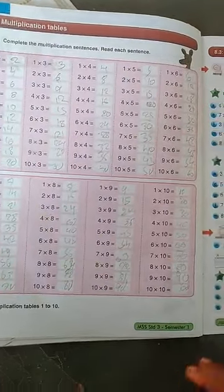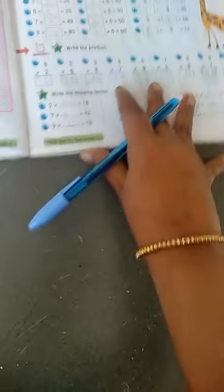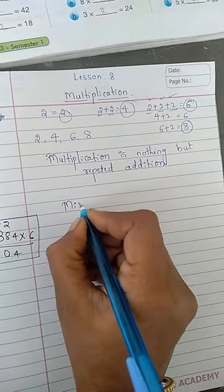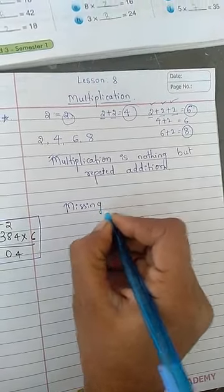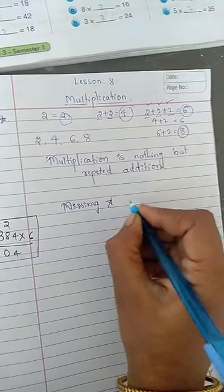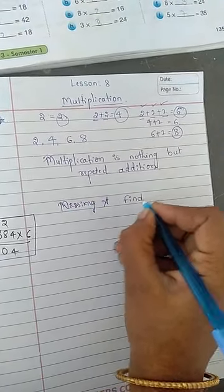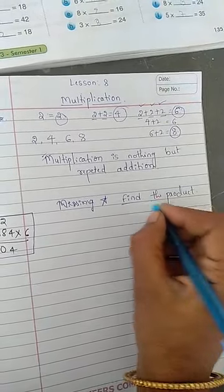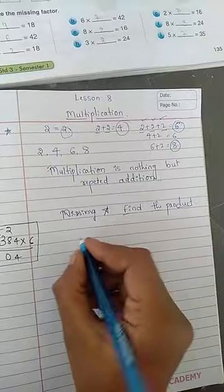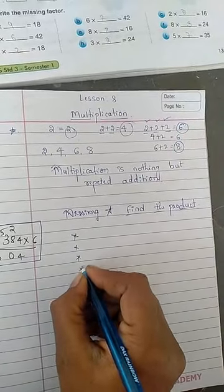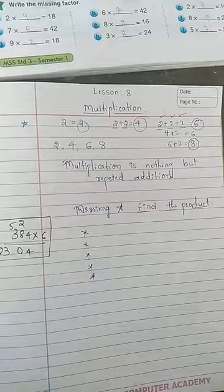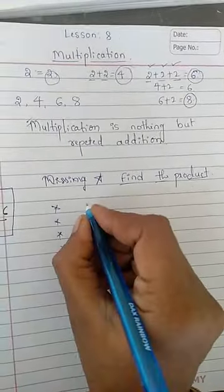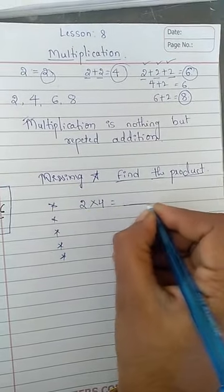This you have to do and today I am going to start the missing factors. What are these missing factors? Let us study. First we will go for find the product. Find the product we have to do. What is this find the product means? They will be giving you some of the multiplication. That you have to write after multiplication what answer you are getting.